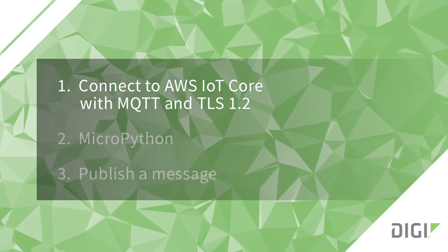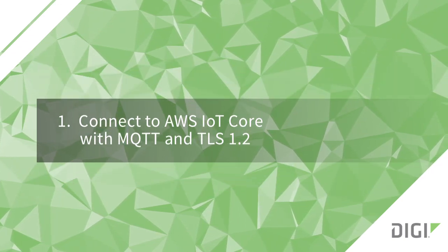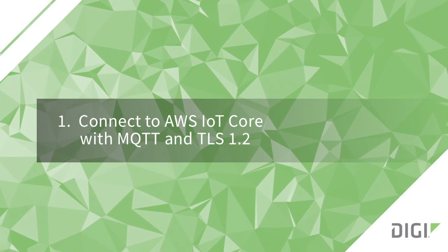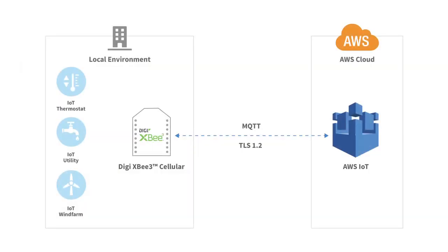First, let's set up AWS IoT with MQTT and TLS certificates. This method can be useful in a system where, for example, a temperature sensor sends a message through a DigiXP3 when the temperature gets above a certain level. You can use this method to publish readings from many different sensors or devices.